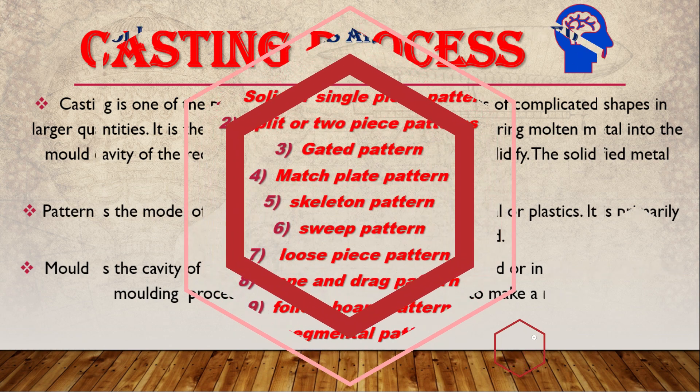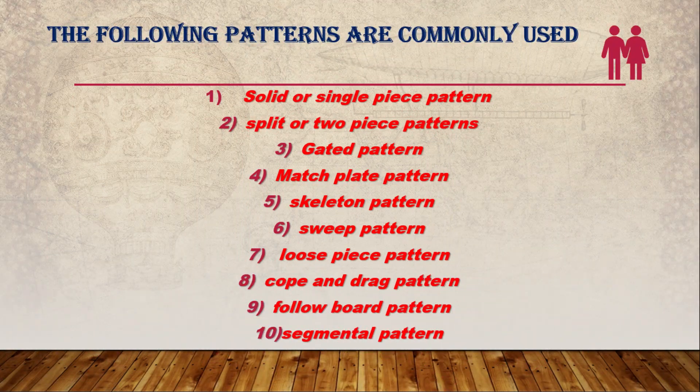In casting we use different patterns, which are created from wood or plastic. Some types include: solid or single piece, split or two piece, skeleton pattern, sweep pattern, loose piece pattern, cope and drag pattern — different types of patterns used for different shapes.